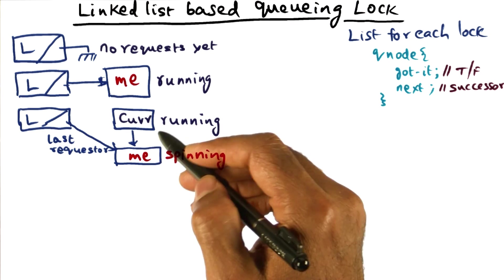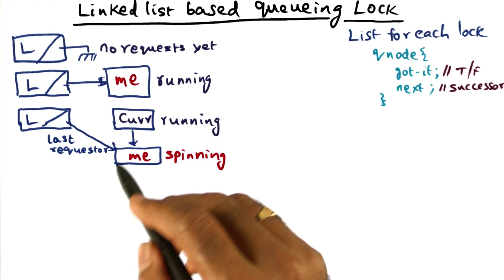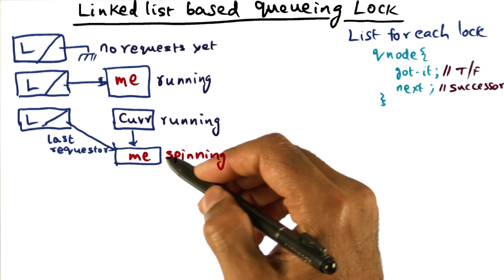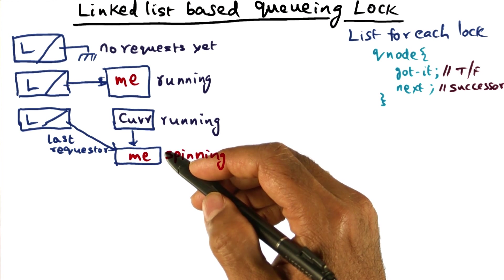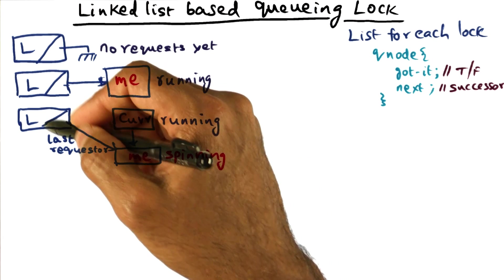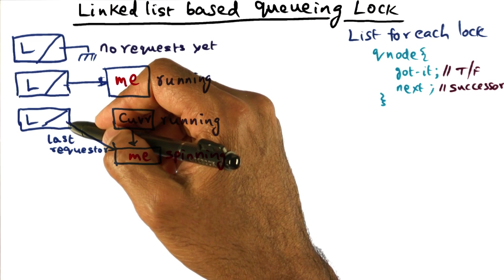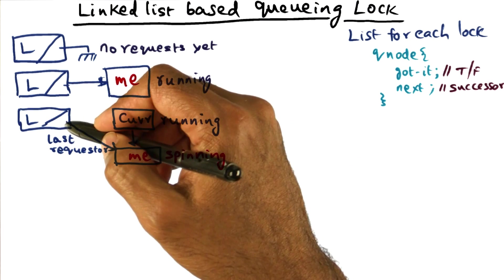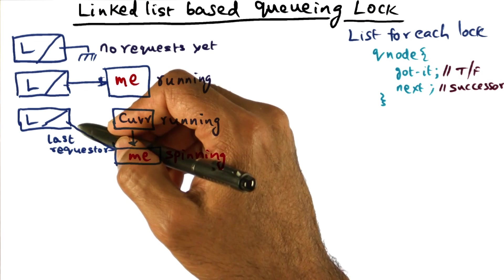There may be somebody else using the lock already. And if that is the case, then what I would have to do is queue myself in this data structure. And the way I do that is to indicate by setting the last pointer in this list to point to me. This pointer is always pointing to the last requester.